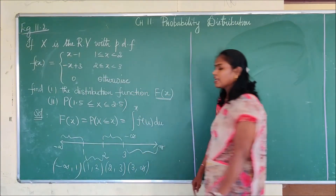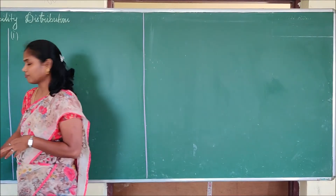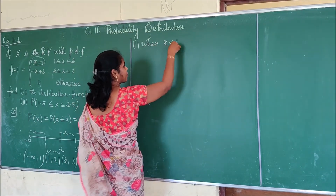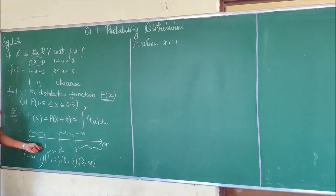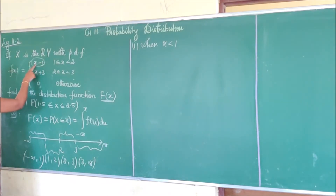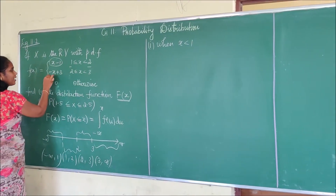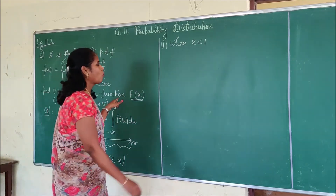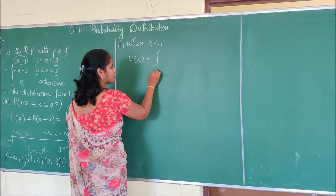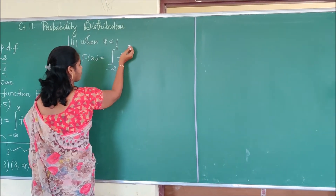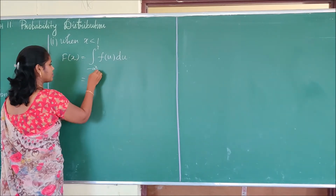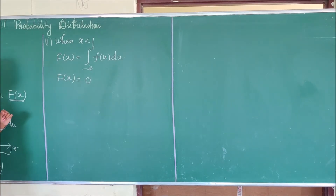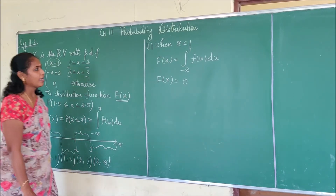For the first interval, when x is less than 1, x lies between minus infinity and 1. My random variable is defined as 0 in this region. So F of X equals the integral from minus infinity to X of f of u du, which is 0. Therefore F of X equals 0 for the interval minus infinity to 1, because the function is not defined in that interval.